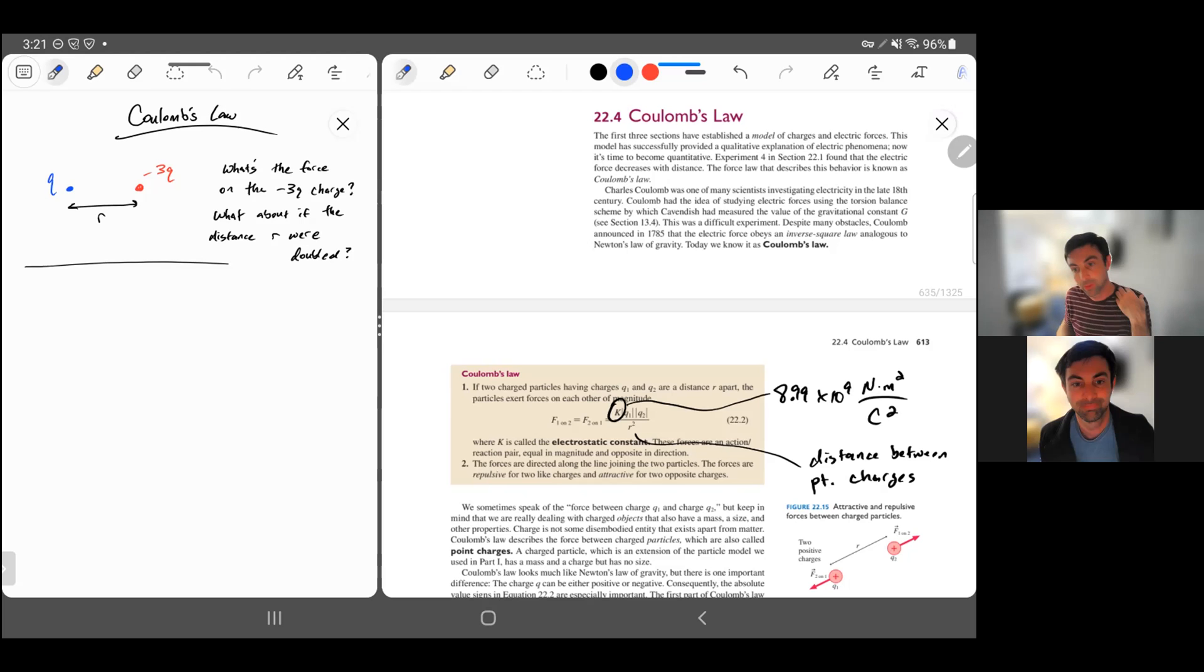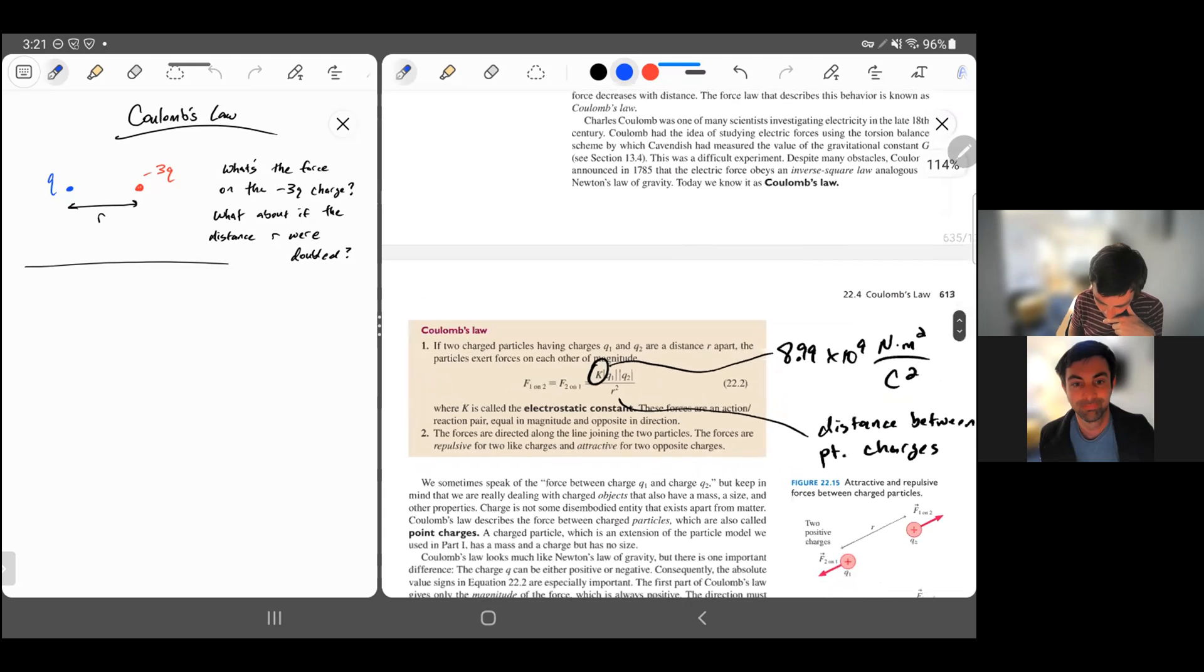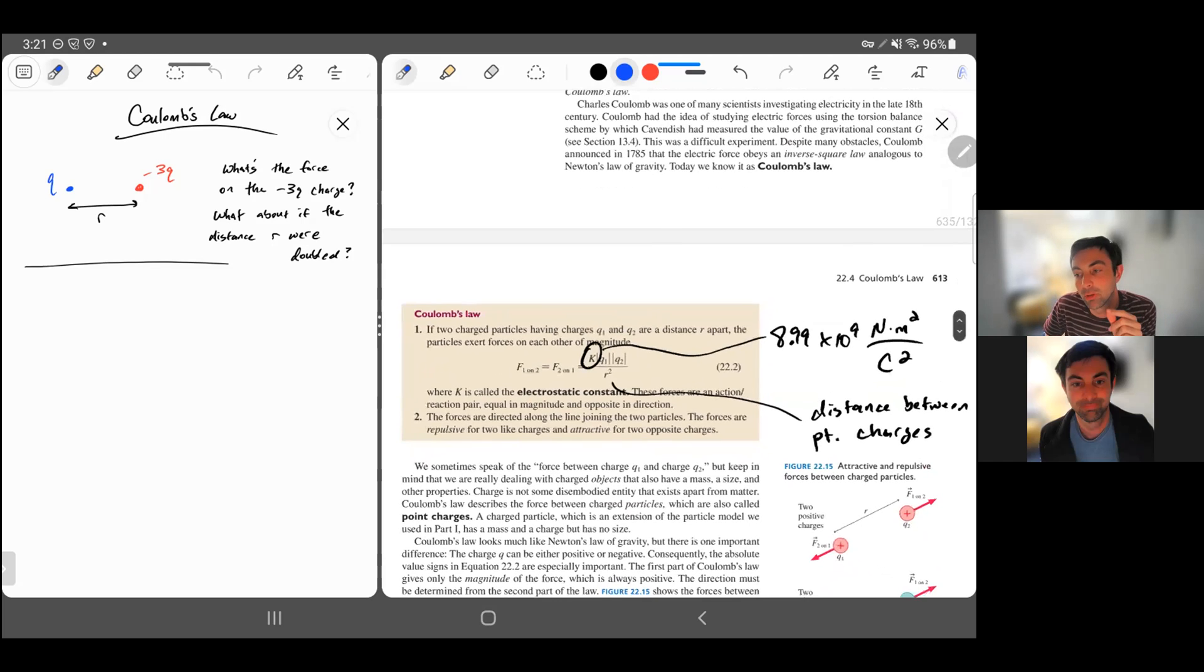Coulomb's Law is the name we give to this equation right here. This equation is giving the magnitude of the force between two charges. Separately, in point number two, they talk about the direction. Like charges will repel each other and unlike charges will attract each other. So if you have a plus charge and a minus charge, they'll attract; plus and plus, they'll repel; minus and minus, they repel.